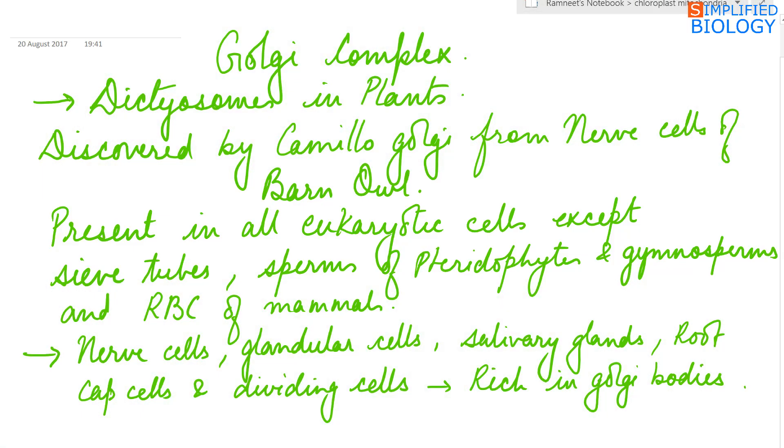Golgi complex is also referred as Golgi apparatus or Golgi bodies. In plants it is known as dictyosomes. Golgi complex was discovered by Camillo Golgi from the nerve cells of barn owl.